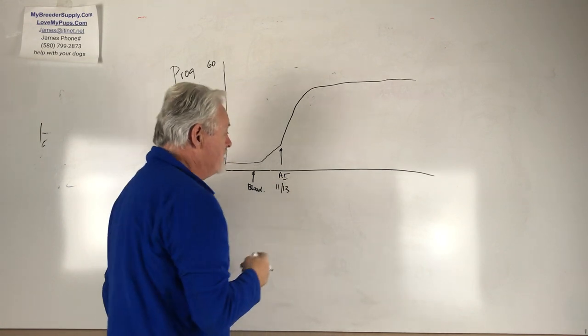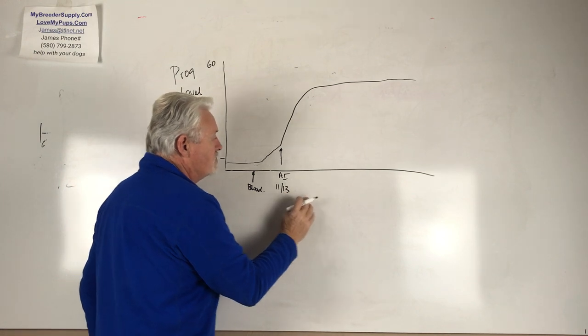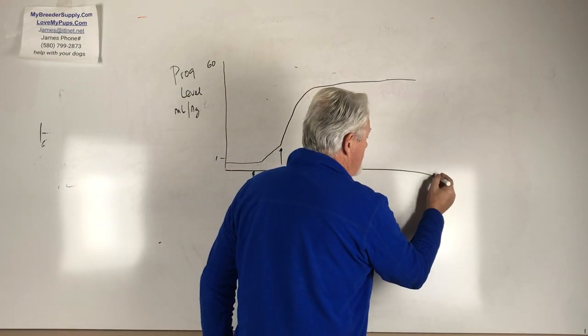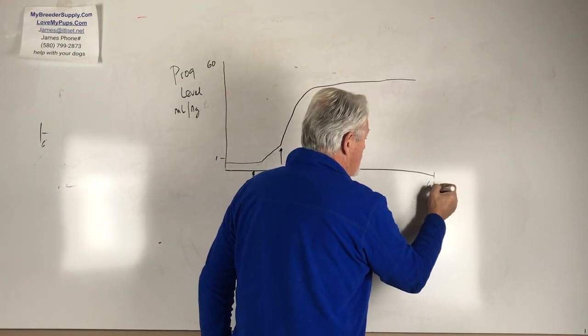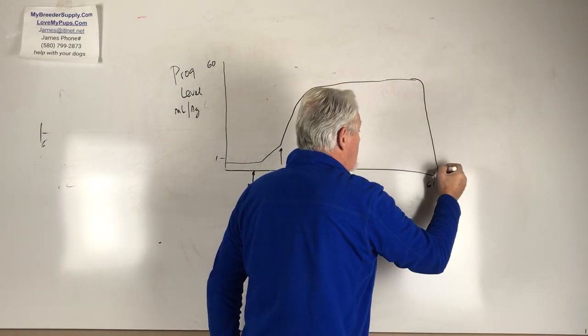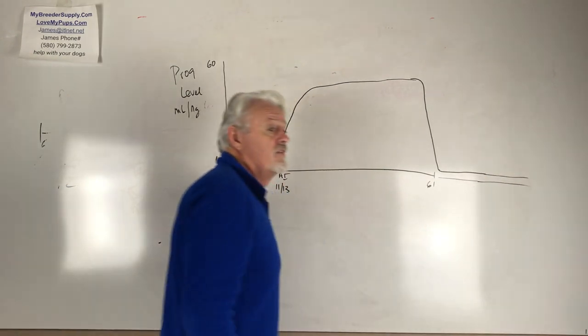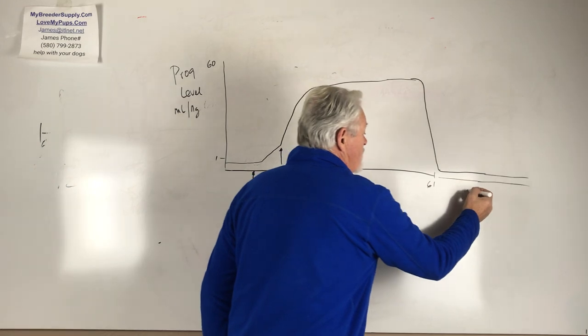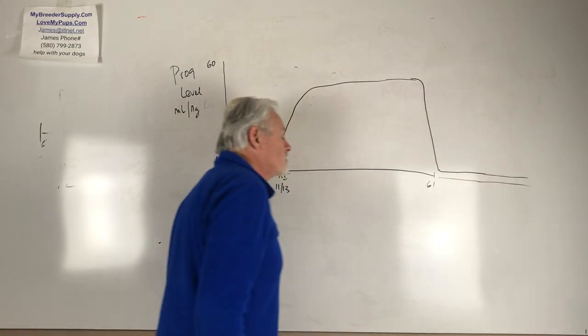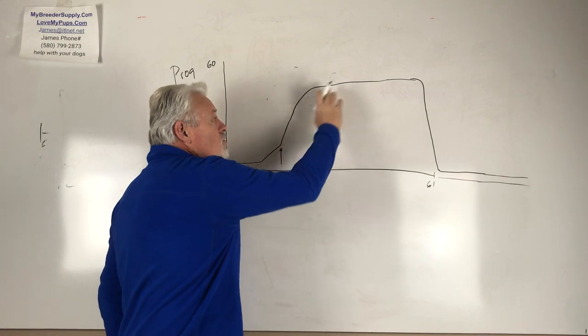This, by the way, is about the point that you'd be AI'ing the dog, and that is about day 11 through 13. Then this whole process from when you AI the dog to when it would have puppies is typically about 61 days, and what happens is the progesterone level then drops and the dog then goes into a six month or four month or 12 month period where its progesterone level is low again.